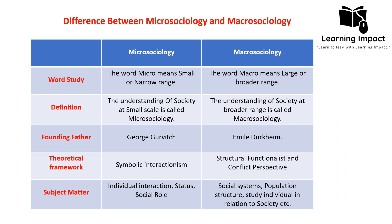Macro sociology includes the structural functionalist approach, which states that society is a collection of social units and different social institutions that are dependent on each other for proper functioning. It also includes conflict theory, which holds that in our society there are two classes — the 'haves' and the 'have-nots.' The 'haves' control the means of production and exploit the 'have-nots,' leading to social conflict, as proposed by Karl Marx.